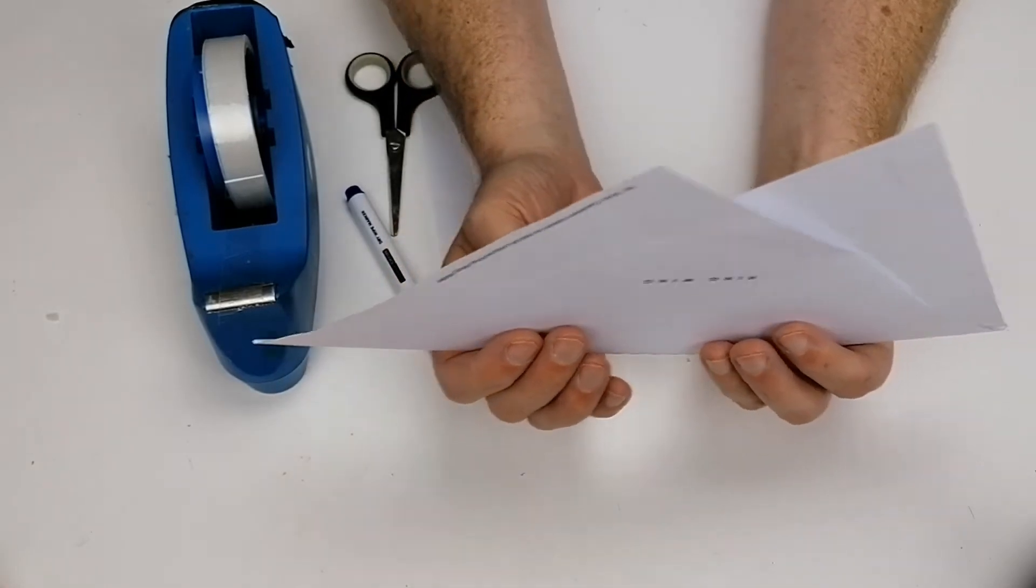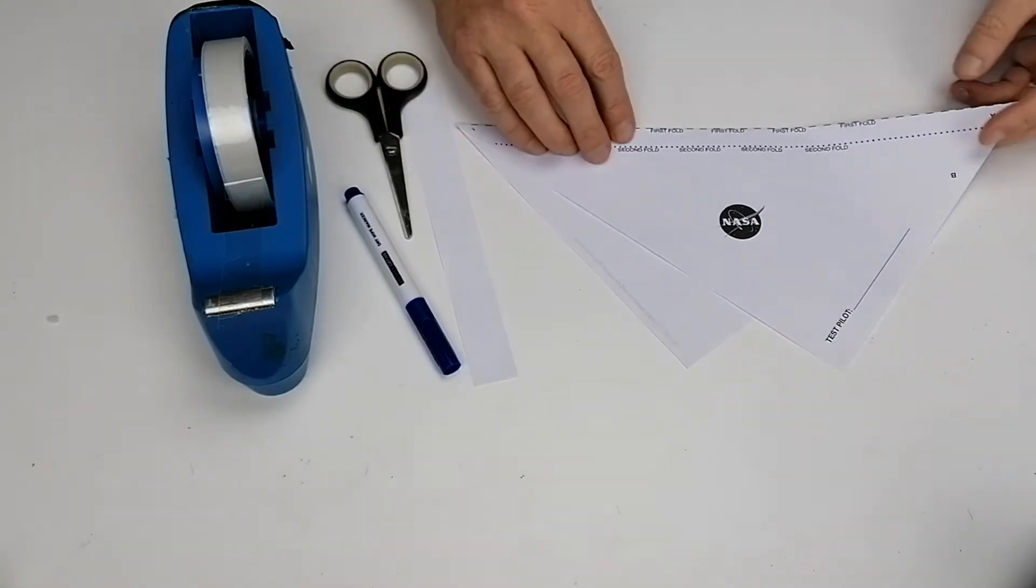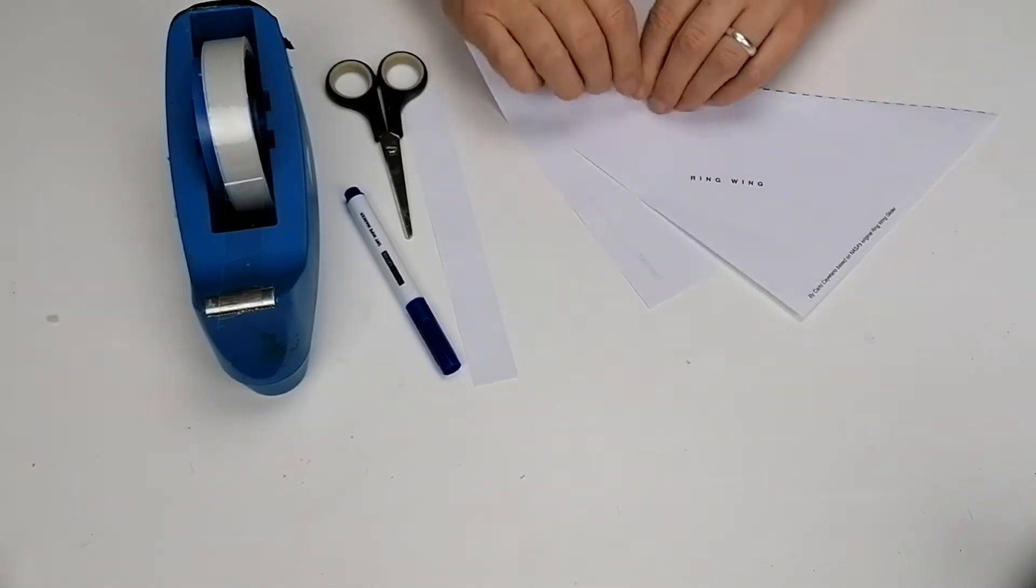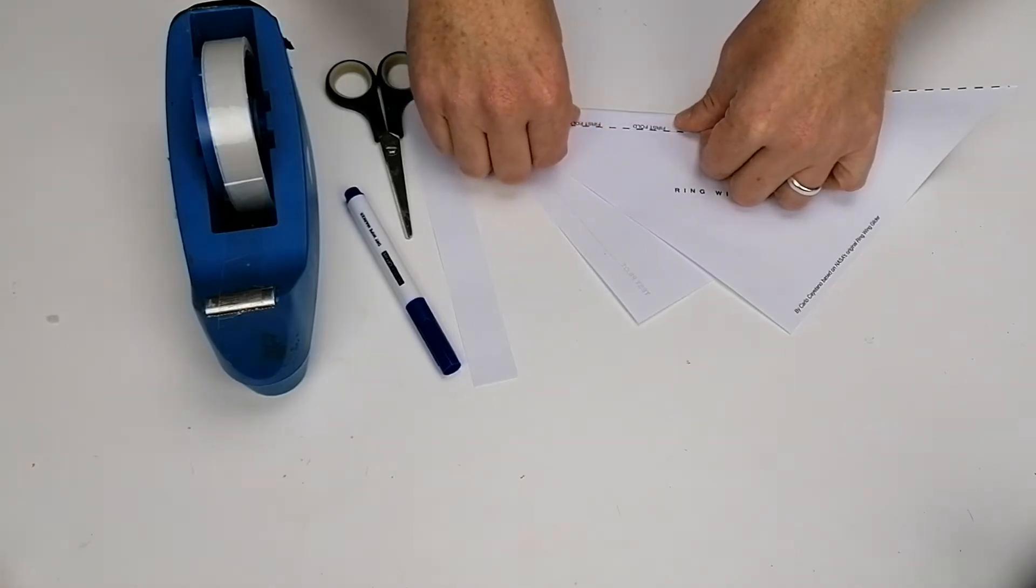So what we need to do is do a second fold. I actually like to do a third fold on this, but I'll just show you how to do the second fold. You're going to put it down on the table again and then fold it along the second dotted line there.